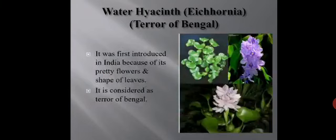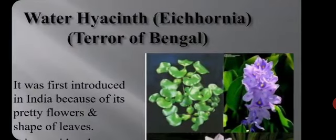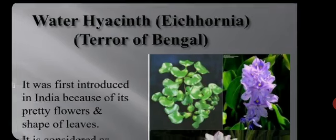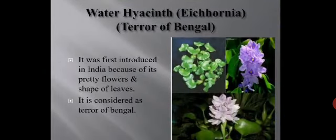Water hyacinth is scientifically known as Eichhornia crassipes. I am going to stop this video here. In the next part of the video, I am going to deal with the next topic, that is sexual reproduction. Thank you.